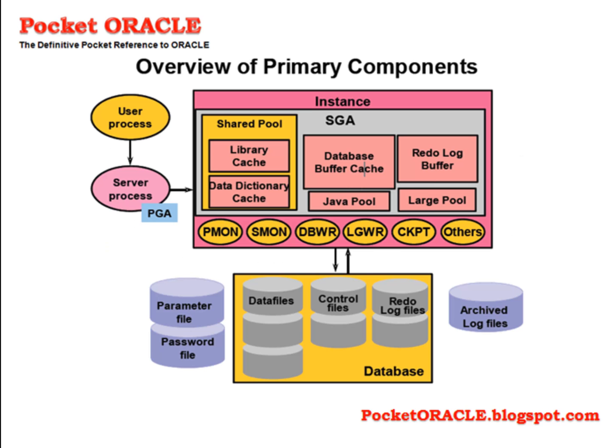An Oracle server consists of two entities: the instance and the database. They are separate but connected. The instance consists of memory structures and processes. Its existence is transient, in your RAM and on your CPUs. The database consists of physical files on disk. Thus the lifetime of the instance is only as long as it exists in memory. It can be started and stopped.